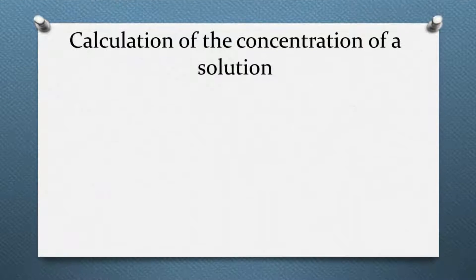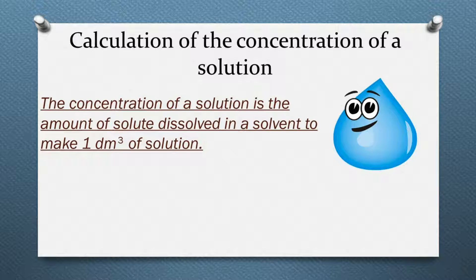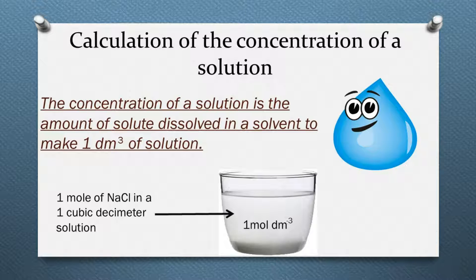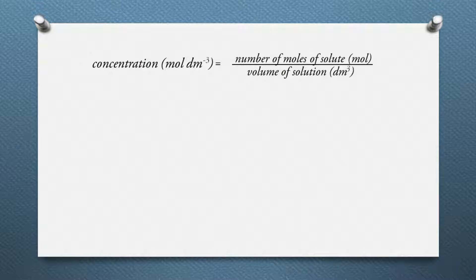How to calculate the concentration of a solution. As a chemist, this is a very simple and easy task to do. The concentration of a solution is the amount of solute dissolved in a solvent to make one cubic decimeter of the solution. The solvent is usually water. If one mole of a compound is dissolved to make one decimeter cube of solution, the concentration is one mole per decimeter cube. To find the concentration of a solution, we divide the number of moles of the solute by the volume of the solution.